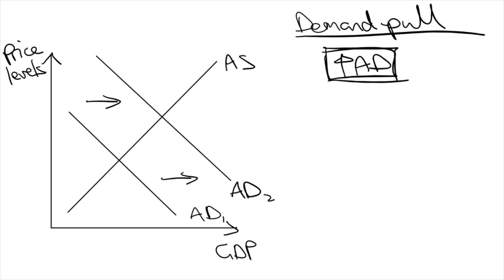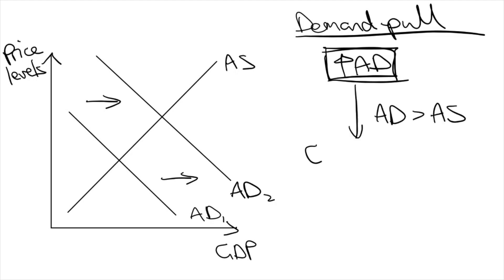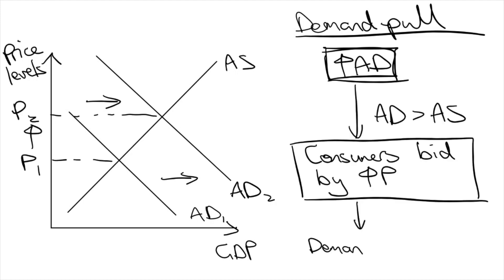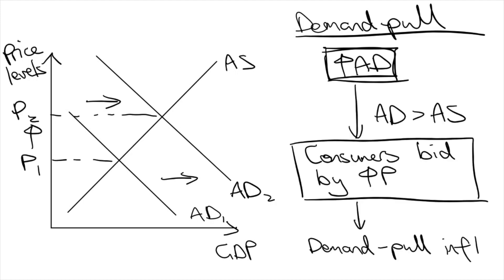That is, the economy is running at full capacity and can't produce anymore. Demand-Pull Inflation happens because an increase in aggregate demand in this scenario means there's an increase in spending in the economy, but with no increase in production, consumers just increase prices to bid for existing levels of supply.